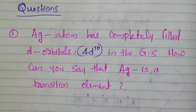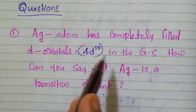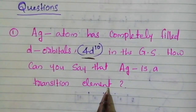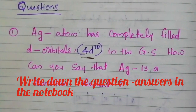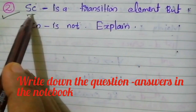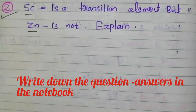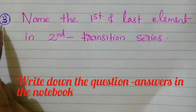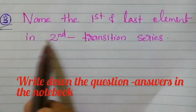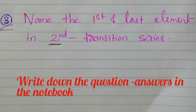Now let's discuss some questions from this portion. First question: the silver atom has a completely filled D orbital (4D¹⁰) in the ground state — how can you say that silver is a transition element? Second question: scandium is a transition element but zinc is not — explain. Third question: name the first and last element in the second transition series. Note that the first and last elements are important for all four transition series.